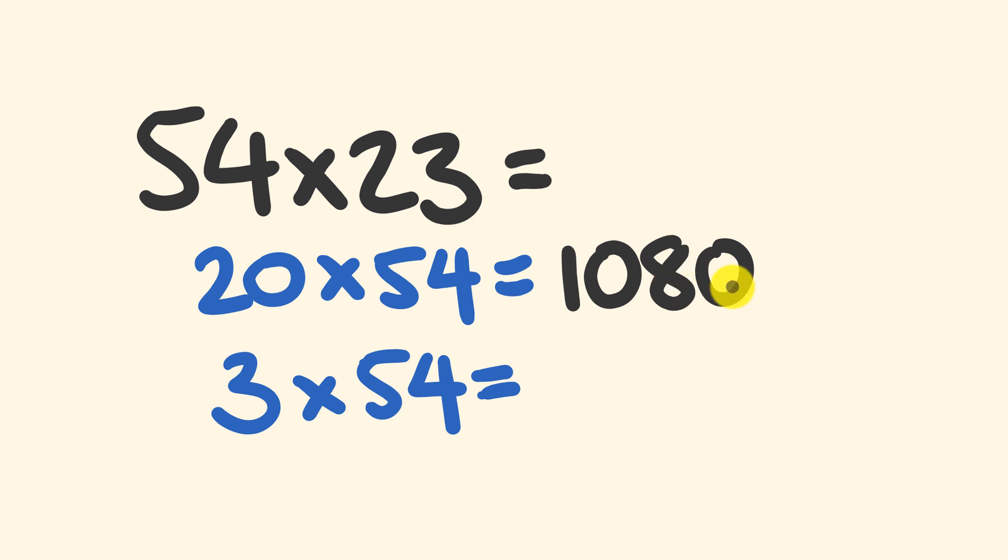Next, what you do is 3 times 54. 3 times 50 is 150. 3 times 4 is 12. 150 plus 12 is 162. Finally, what we're going to do is we add our two results together. 1080 plus 162. We add these together. We get our final answer of 1242.